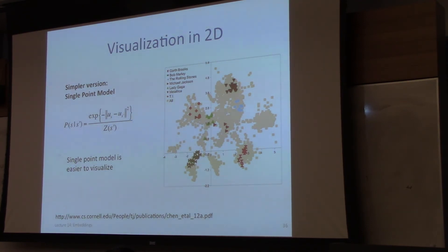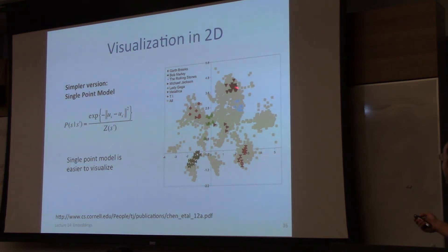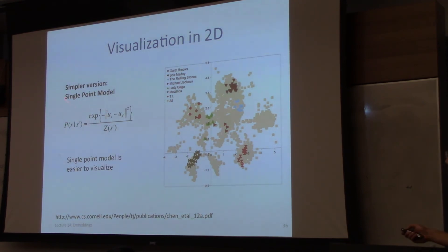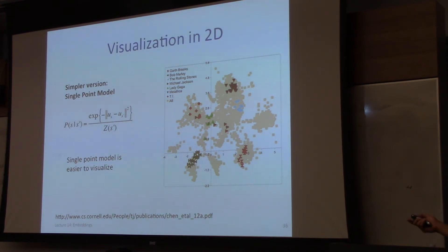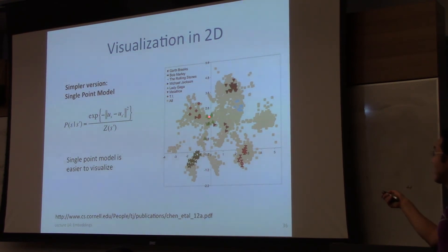One reason to prefer a single-point model is that it's easier to visualize. Here's a visualization where songs of various artists are marker-coded on a two-dimensional embedding. You can see they tend to cluster together — presumably, playlists that contain one Lady Gaga song often contain other Lady Gaga songs. The probability of transitioning to another song decays exponentially with distance as defined by this embedding.